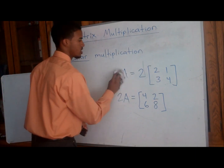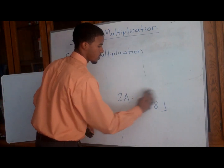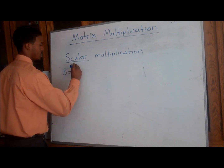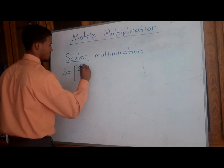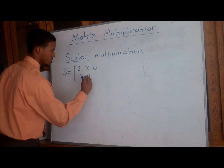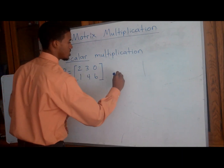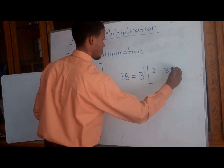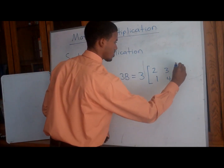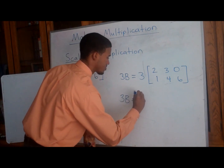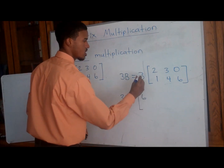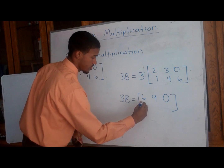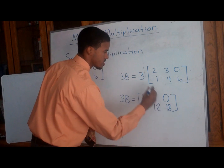Let's do one more example. Say we have matrix B, a 2 by 3: [2, 3, 0 / 1, 4, 6], and our problem is 3 times B. Every entry is going to be multiplied times 3. So our solution: 3×2=6, 3×3=9, 3×0=0, 3×1=3, 3×4=12, and 3×6=18.